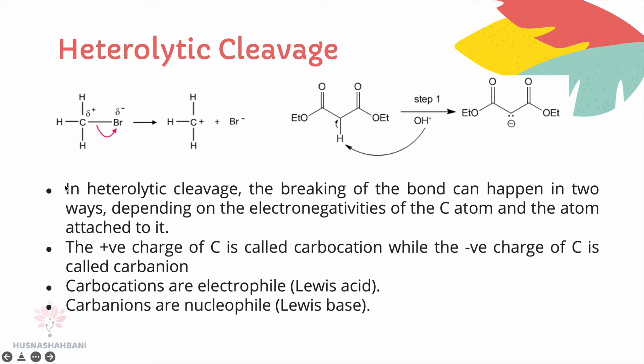In heterolytic cleavage, the breaking of the bond can happen in two ways depending on the electronegativities of the carbon atom and the atom attached to it. The positive charge on carbon is called a carbocation, while the negative charge on carbon is called a carbanion. Carbocations are electrophiles or Lewis acids, while carbanions are nucleophiles or Lewis bases.